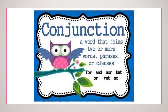Next one is conjunction. Think of 'junction' — a junction means to join something. So a conjunction is a word that joins two or more words, phrases, or clauses. For example: for, and, nor, but, or, yet, so. We use these words to join two words, phrases, or clauses.